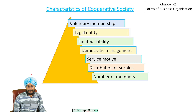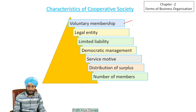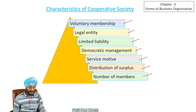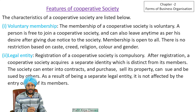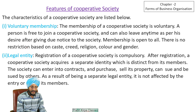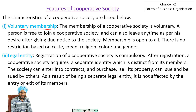Now we will discuss the characteristics of cooperative society, which are: voluntary membership, legal entity, limited liability, democratic management, service motive, distribution of surplus, and number of members. We will discuss each of these characteristics one by one.